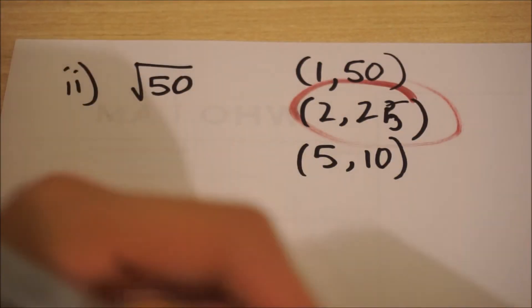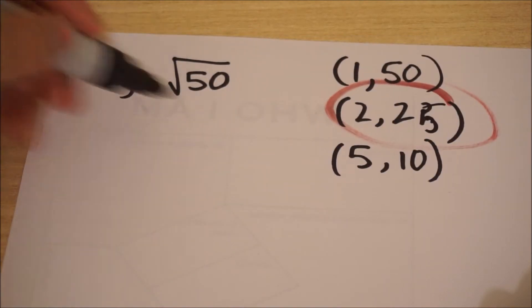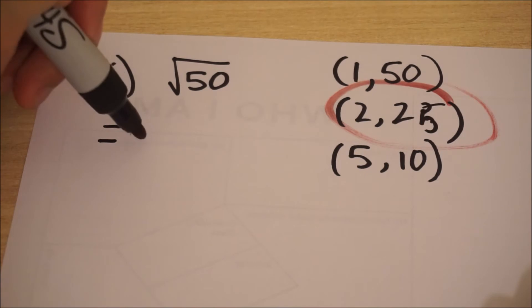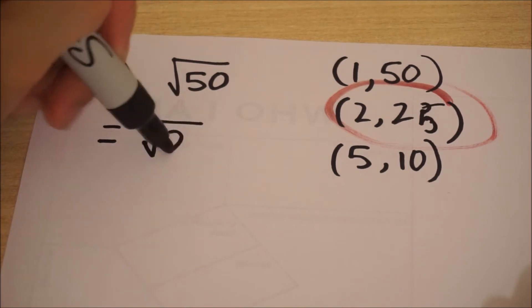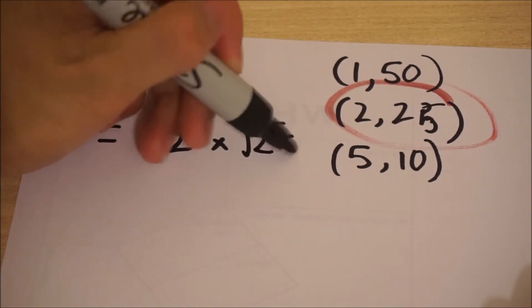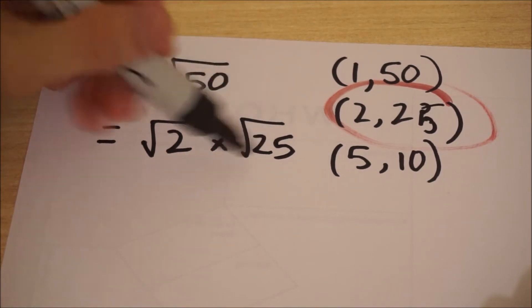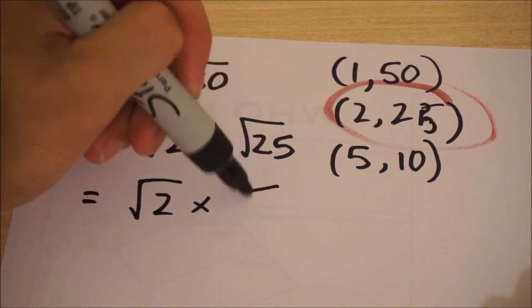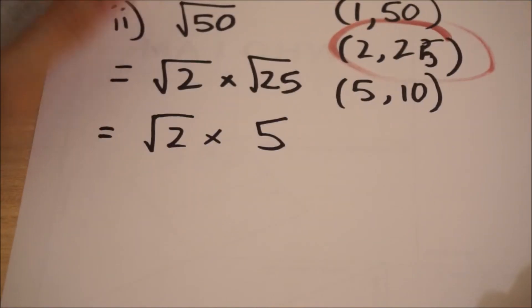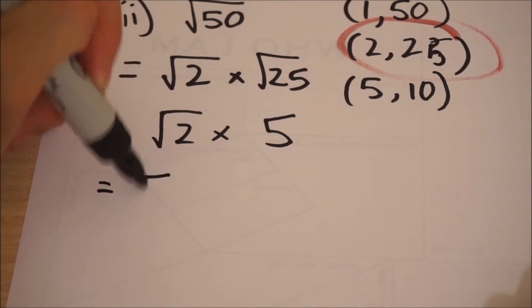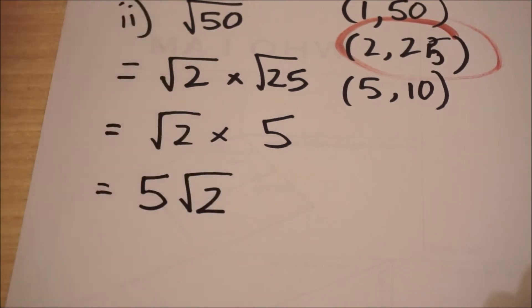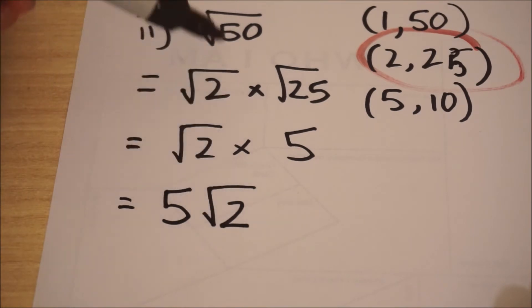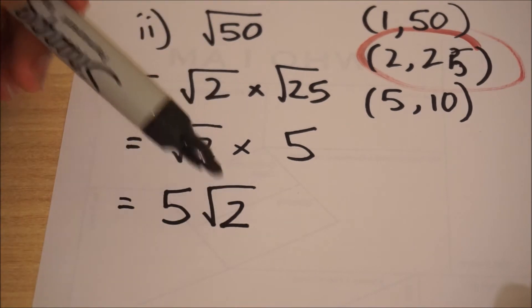Using the same rule, we break up the square root of 50 into the square root of 2 multiplied by the square root of 25. The square root of 25 equals 5, so we can write this finally as 5√2 — 5 lots of root 2. We've reduced the number inside the square root to as small as possible.